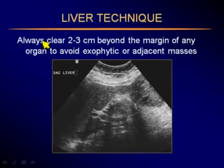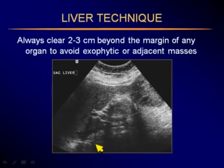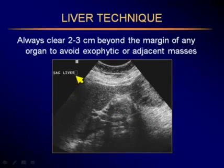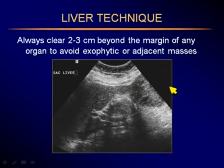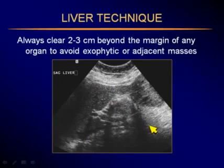One important principle for all structures imaged in ultrasound: we always want to see at least two to three centimeters beyond the margin of any organ, so we can exclude the possibility of exophytic masses or adjacent masses that affect the organ. In this case, the inferior edge of the liver is here, but because we cleared two to three centimeters beyond the margin, we noticed a mass hanging off the inferior edge — a 5-centimeter hepatocellular carcinoma, a hepatoma.